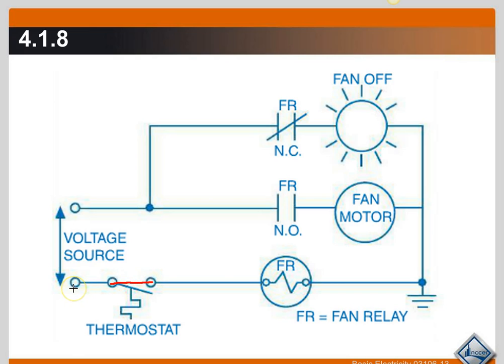So it closes this switch. It applies power to the fan relay coil which creates a magnetic field to switch the electrically controlled switch. When the thermostat closes and the fan relay coil gets power, the magnetic field is going to close the normally open contact and that's going to make it a closed contact.